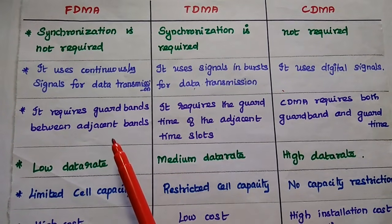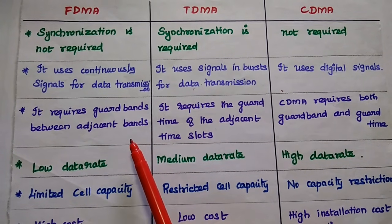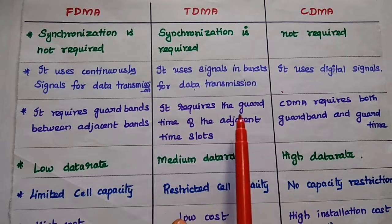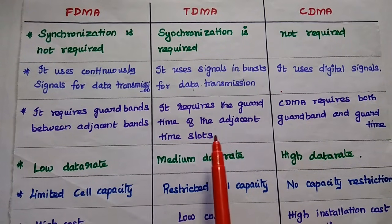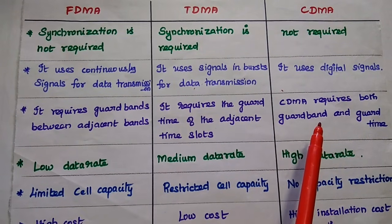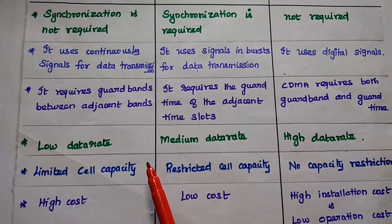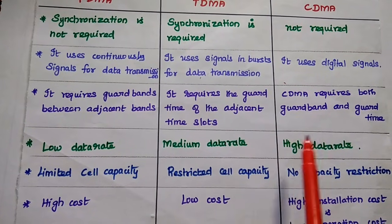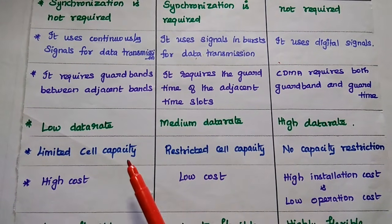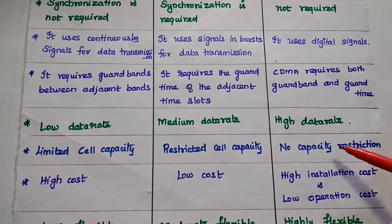FDMA requires guard bands between adjacent bands to prevent unwanted interference. TDMA requires guard time for adjacent time slots to prevent interference. CDMA requires both guard band as well as guard time. FDMA has a low data rate, TDMA has a medium data rate, and CDMA is a high data rate transmission. FDMA has limited cell capacity, TDMA also has restricted cell capacity, but in CDMA there are no capacity restrictions.